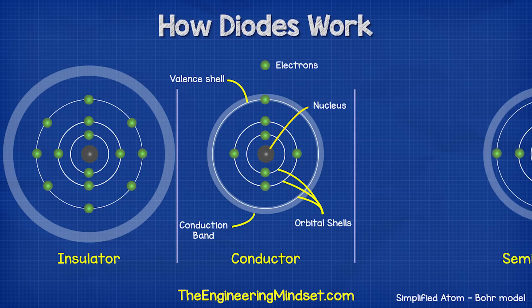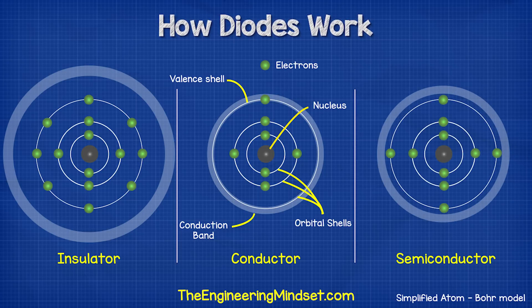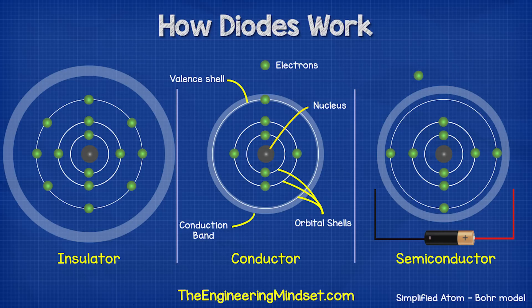However, there's another material known as a semiconductor. Silicon is an example of a semiconductor. With this material, there's one too many electrons in the outermost shell for it to be a conductor, so it acts as an insulator. But as the conduction band is quite close, if we provide some external energy, some electrons will gain enough energy to make the jump from the valence shell into the conduction band to become free. Therefore, this material can act as both an insulator and a conductor.